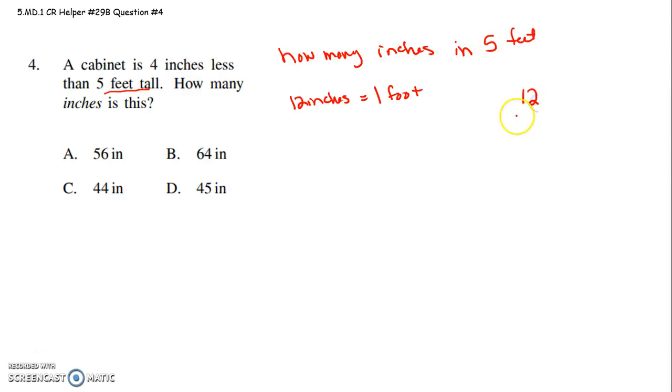So if you take 12 inches per foot times 5 feet, 12 times 5. 5 times 2 is 10, put down a 0, carry a 1. 5 times 1 is 5 and 1 more is 6. That gives us 60 inches.